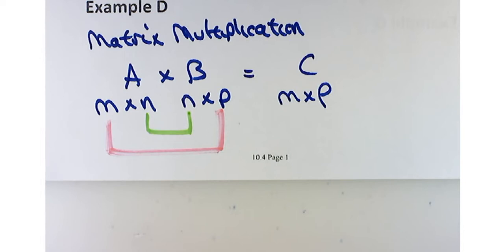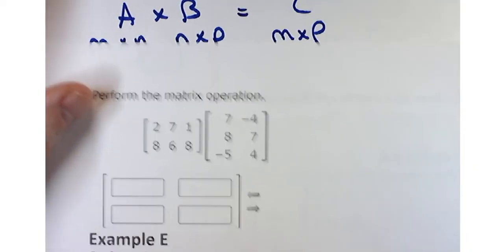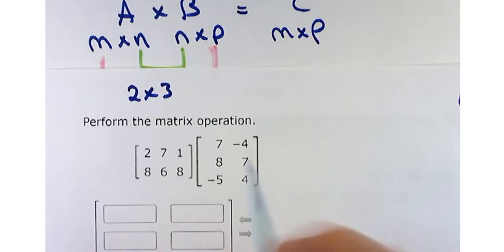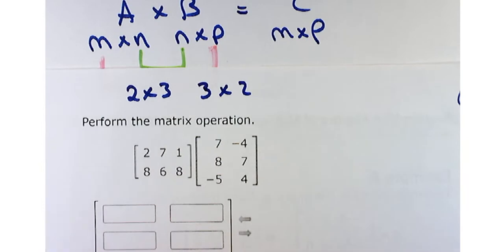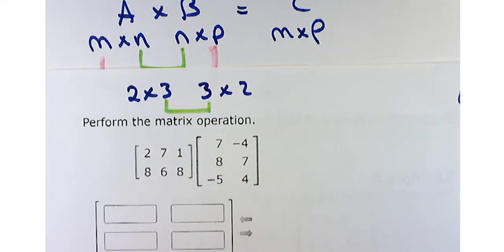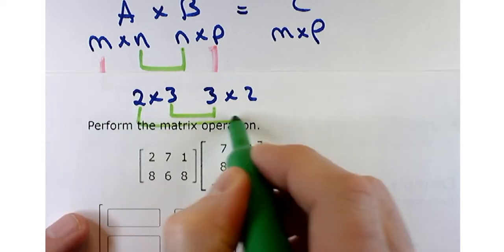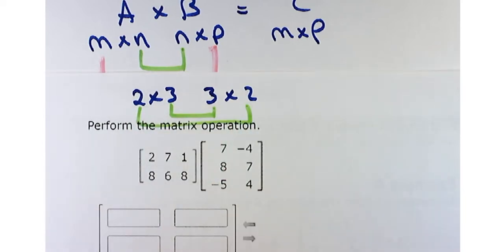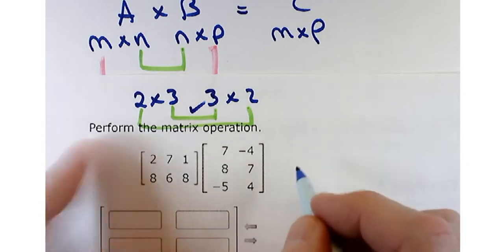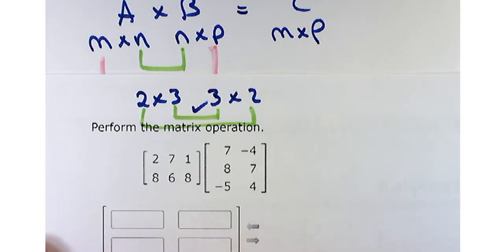Let's take a look at example D and see if we can multiply these together. We have a 2 by 3 matrix and a 3 by 2 matrix. So 2 by 3 and 3 by 2 — these match, so you can do it. And the size of your product is going to be a 2 by 2 matrix.